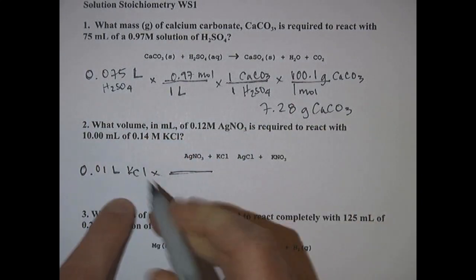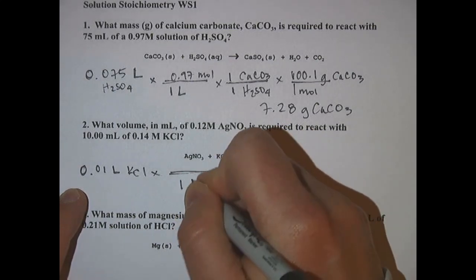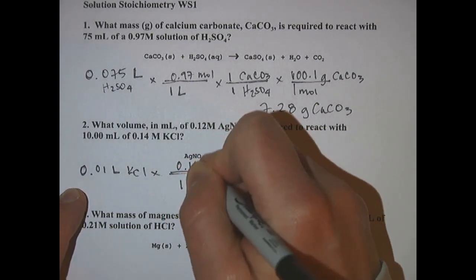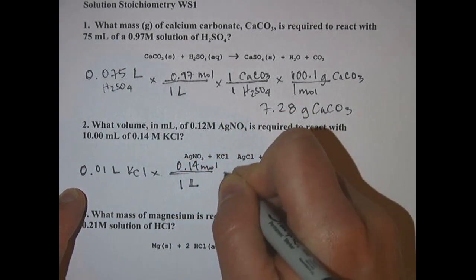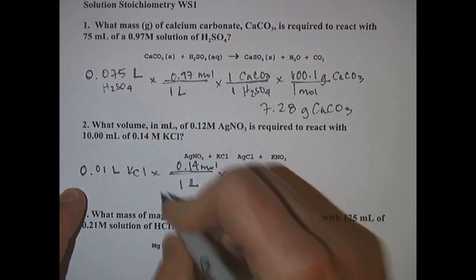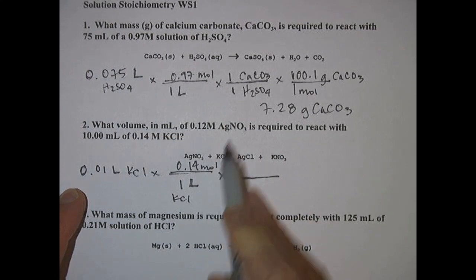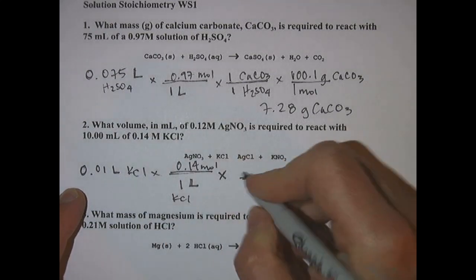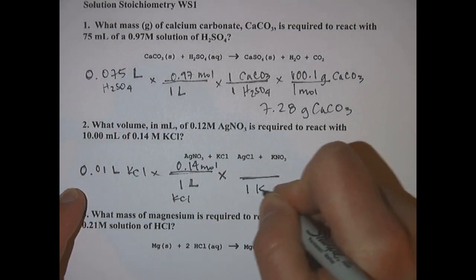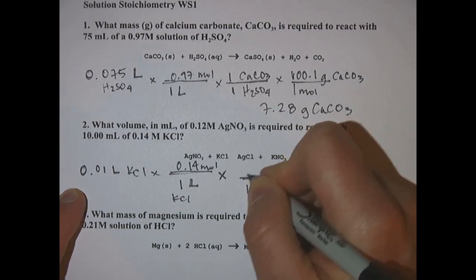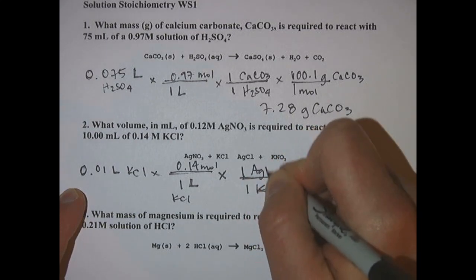Convert that into moles by using the molarity, it's 0.14 moles per liter, so one liter equals 0.14 moles for KCl. Then you want to go from KCl to AgNO3 which is also a one to one ratio, so one potassium chloride will react with one silver nitrate.